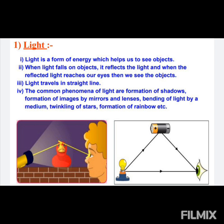But what exactly is light? Light is a form of energy, and energy is the ability or capacity to do some work. Light is a form of energy and it always travels in a straight line.